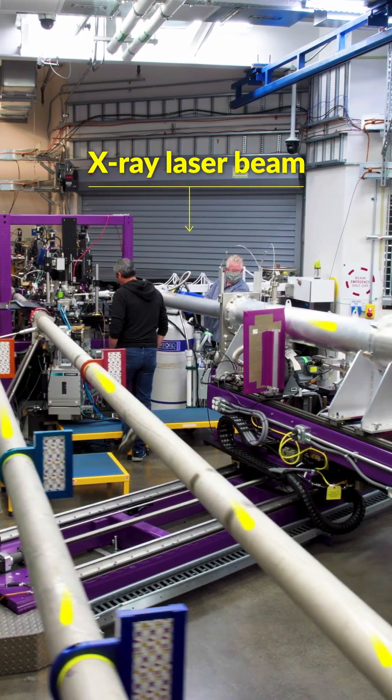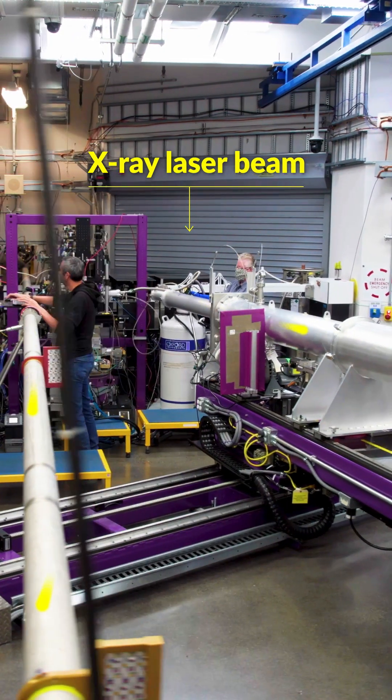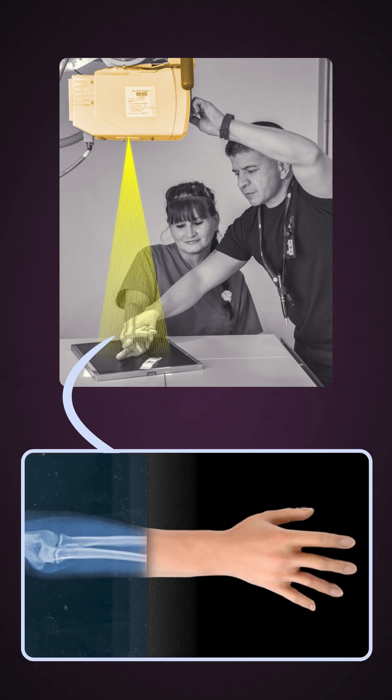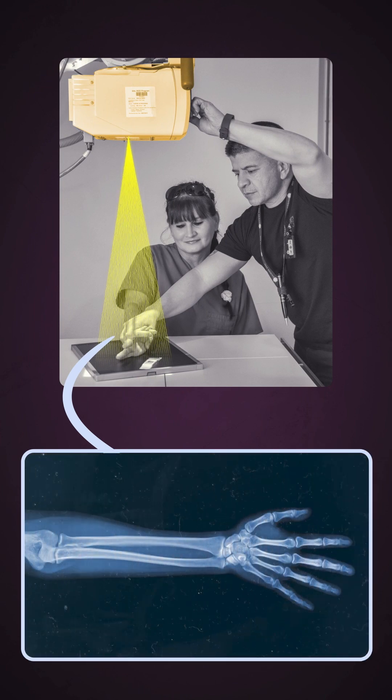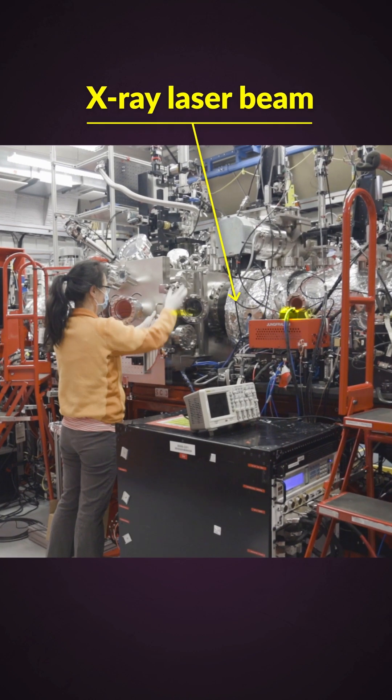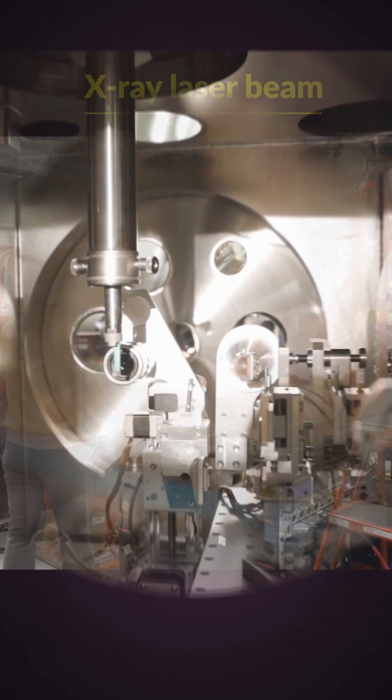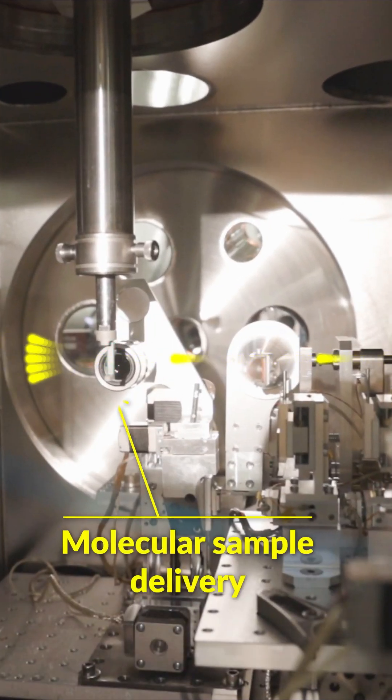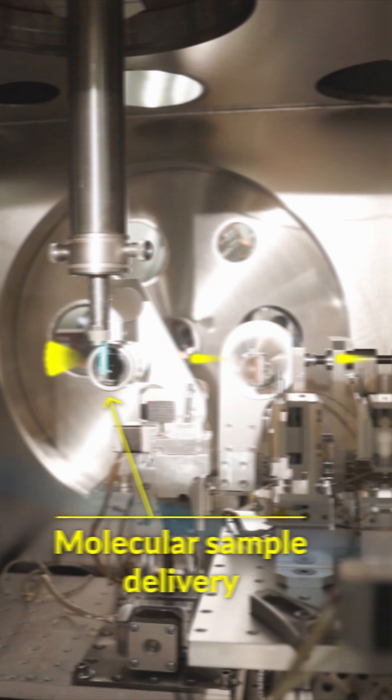Have you ever wondered why scientists use x-rays in their research? Just like the way x-rays at hospitals can reveal the bones inside our bodies, scientists use x-rays to see inside materials to uncover their molecular structures and properties in great detail.